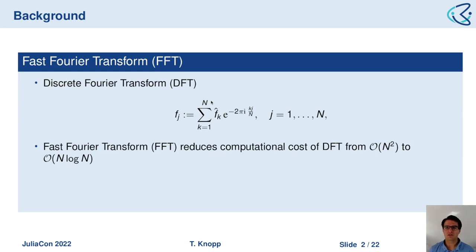What's important is that the DFT has a computation cost which is quadratic in the length of these two vectors n. This quadratic cost is often much too large to make the DFT applicable. Fortunately, in the last century, the fast Fourier transform — short FFT — has been developed, and it allows reducing the computational cost from quadratic to n log n.